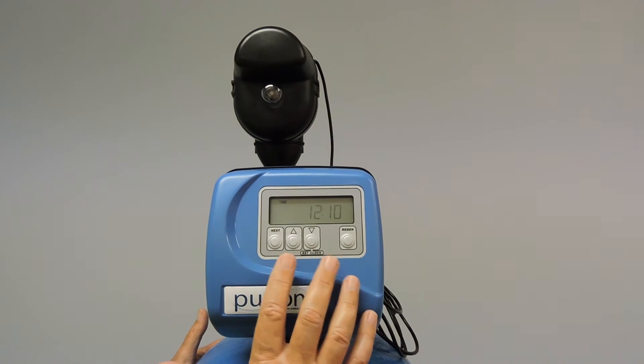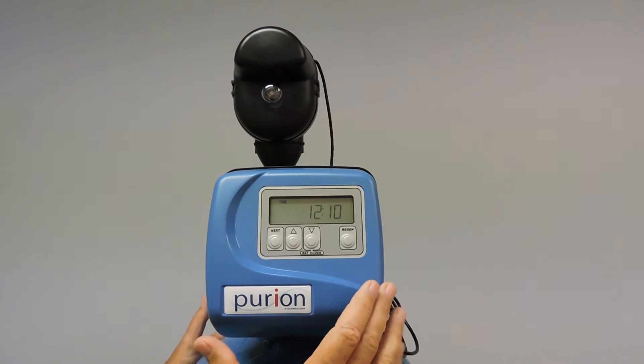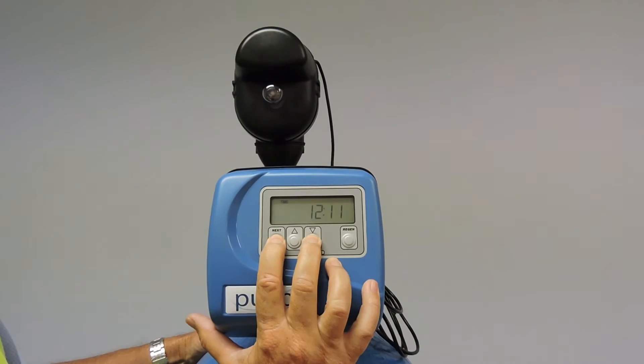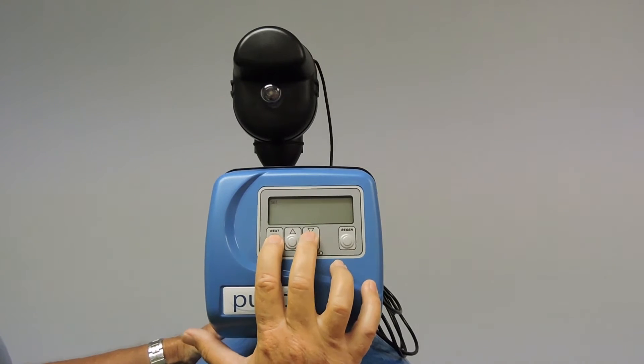Straight out of the box we have time of day flashing. To access the program we will press the next and down button simultaneously for 5 seconds or until the screen changes. Then we repeat the same process.